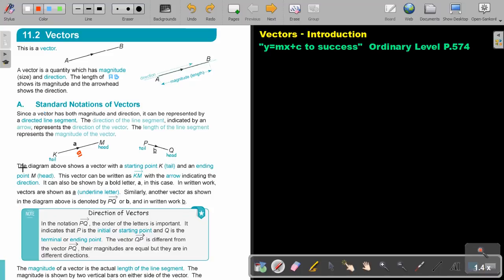So basically, the diagram above shows a vector with a starting point. So the starting point is always the tail, and the ending point, the head. The vector can be written as KM, so the two capital letters with an arrow on top, with the arrow indicating the direction. It can also be shown by a bold letter A, in this case. And remember, in written work, vectors are shown as A. Do not bold print it in writing, just underline the letter.